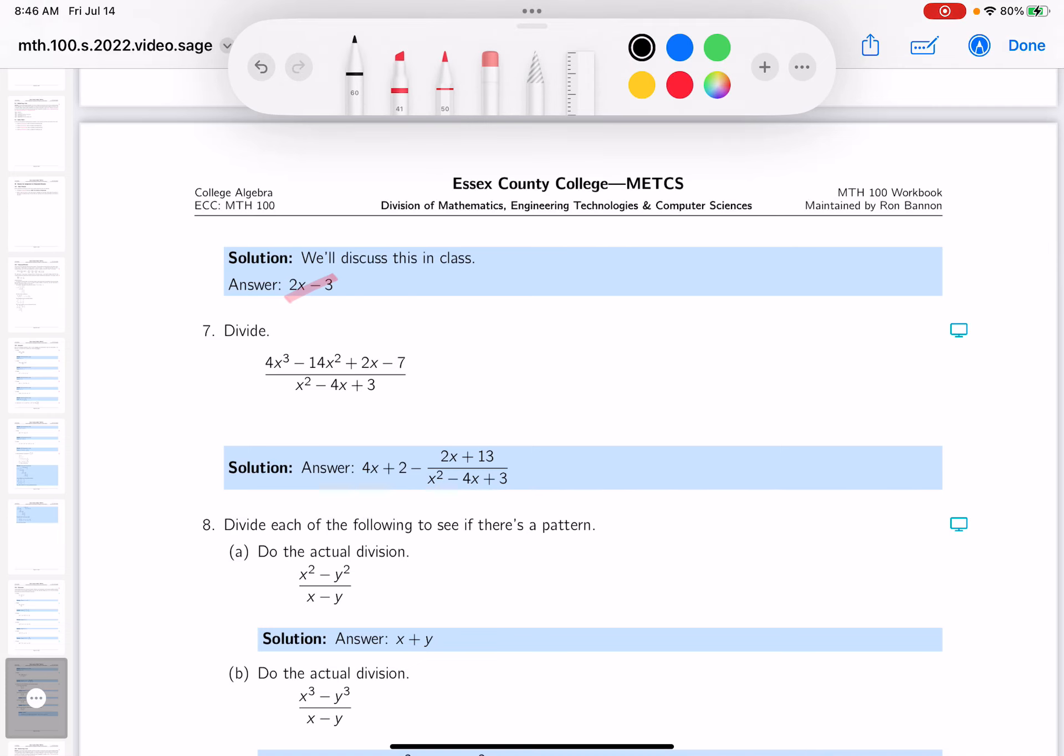Okay, so our number 7, a little more difficult, and I'm going to write it down. It's x squared minus 4x. That's the divisor.